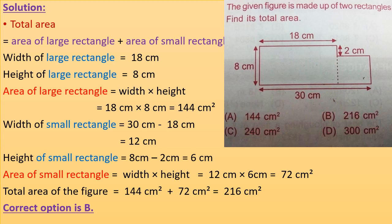Area of the large rectangle equals width times height equals 18 cm times 8 cm equals 144 cm squared. The width of the small rectangle equals the total width of both rectangles (30 cm) minus the width of the large rectangle (18 cm) equals 12 cm. The height of the small rectangle equals 8 cm minus 2 cm (the gap between the heights of the two rectangles) equals 6 cm.